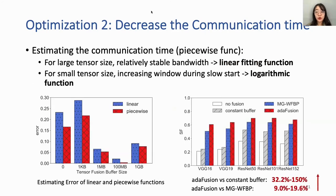In this strategy, the key point is to estimate communication time accurately. Different from MGWBP, we adopt a piecewise function to fit the relationship between communication time and tensor size. For large tensor sizes with relatively stable bandwidth, a linear fitting function is used, same as MGWBP. For small tensor sizes, a logarithmic function mimics the increasing window during slow starts. We compare estimation errors of the linear and piecewise functions, and our piecewise function achieves lower estimation error in real constant tensor fusion transmission.